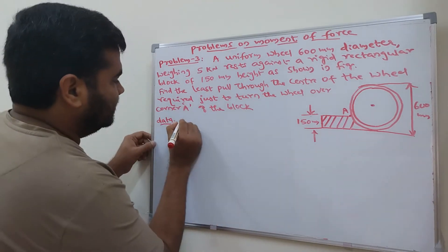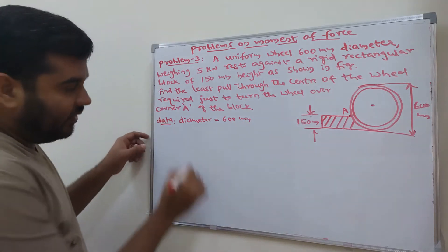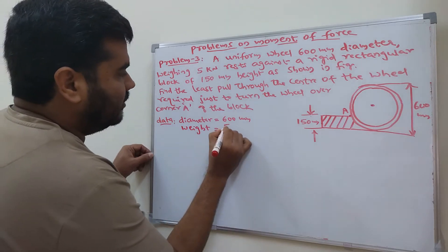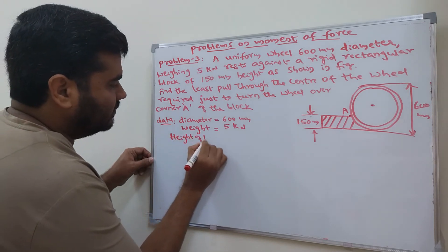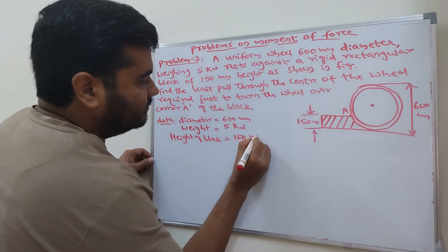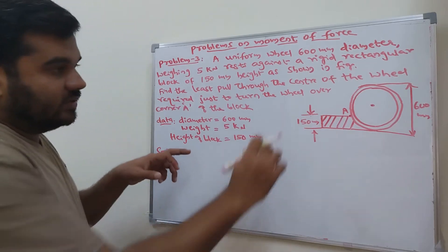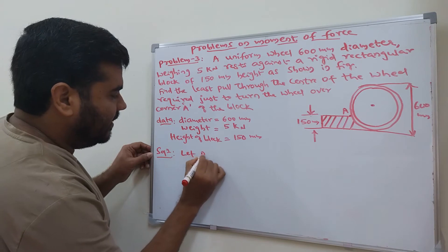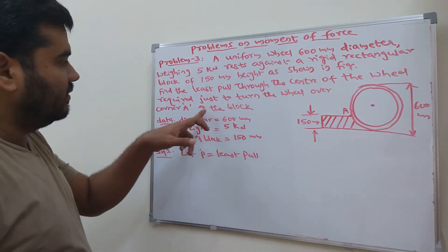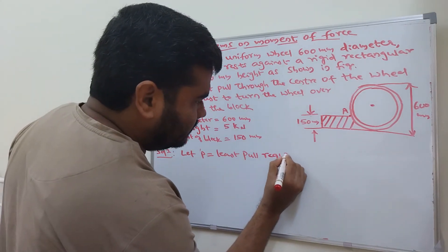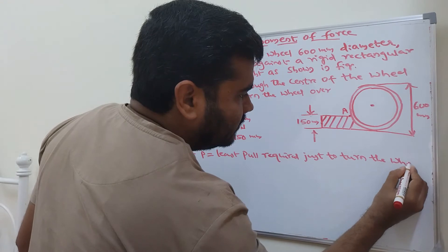Data given: diameter D = 600 mm. Next, weight of the wheel = 5 kilo newton. Next, height of block = 150 mm. Now go for solution. Let P be the least pull required just to turn the wheel.